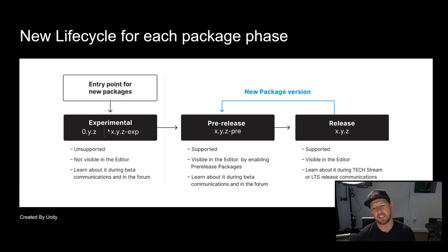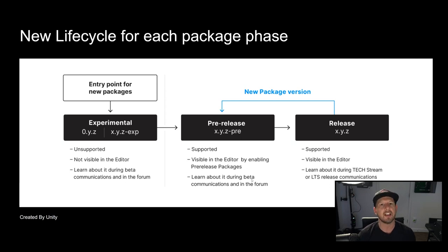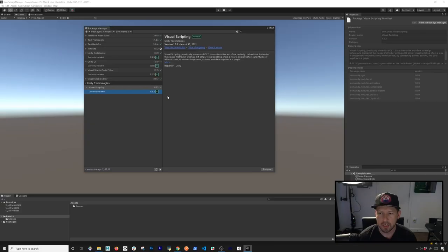Once a package moves from experimental, it goes into a pre-release stage where it becomes visible in the Unity Editor as long as you enable that feature. Pre-release packages are supported by Unity, visible in the editor when pre-release is enabled, and discussed in beta communications and forums. Release packages are supported, visible in the editor by default, and ready for use in production.